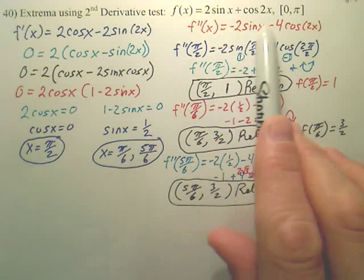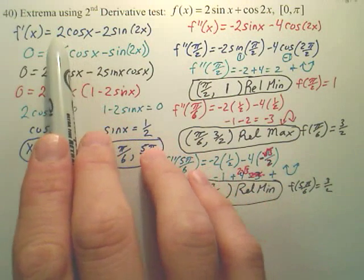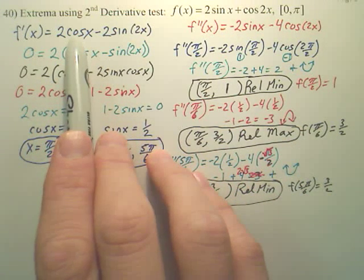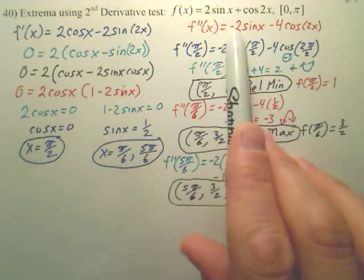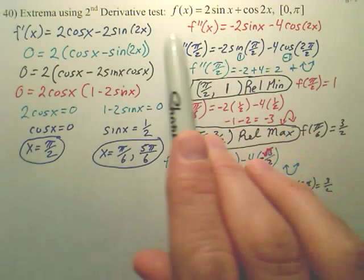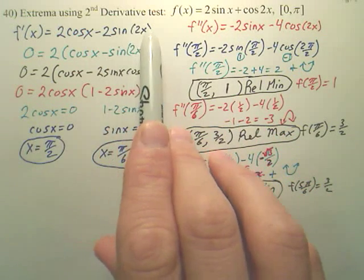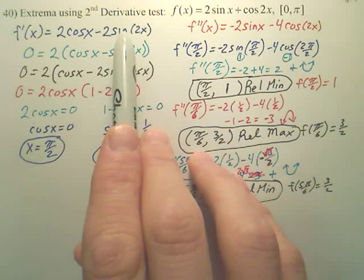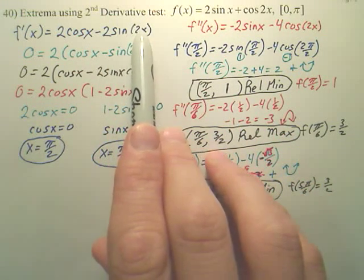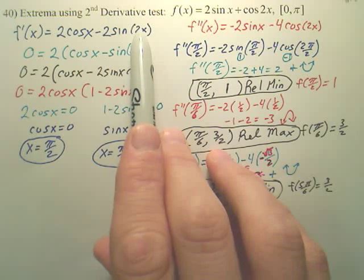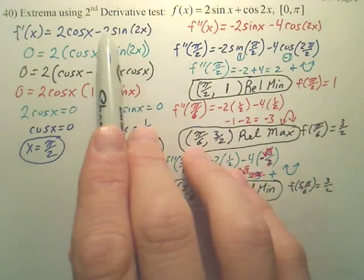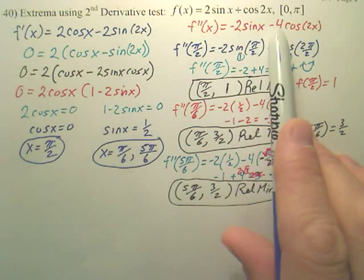To find the second derivative: deriving cosine gives you negative sine, so you get negative 2 sine x. Then deriving the second term, leave the 2 in front — the derivative of sine 2x is cosine 2x times 2, so 2 times 2 gives you 4. That's your second derivative.